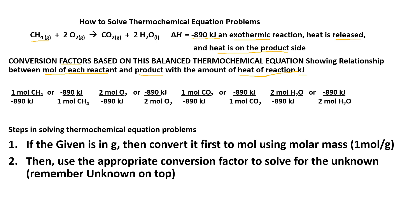One conversion factor is 1 mole CH4 over negative 890 kilojoules, or negative 890 kilojoules over 1 mole of CH4. These are the two conversion factors relating CH4 and delta H, the heat of reaction. The relationship between 2 moles of oxygen and delta H is 2 moles of oxygen over negative 890 kilojoules, or negative 890 kilojoules over 2 moles of oxygen.